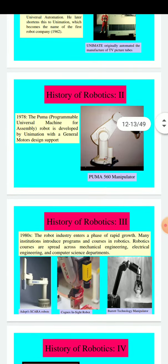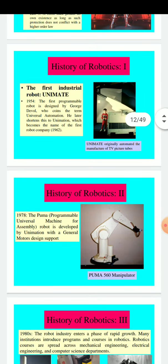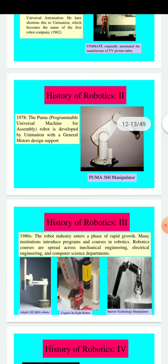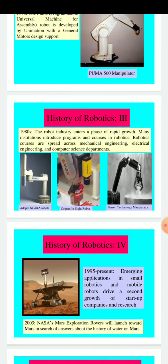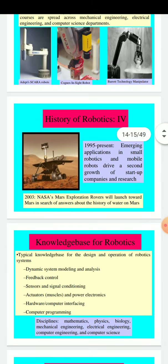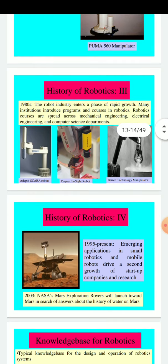Overall, the history of robotics started in 1954 with the Unimation robot. In 1978, through the PUMA company, a Programmable Universal Machine was developed. In 1980, mechanical, electrical, and computer science engineering departments began taking interest and many institutions were established. In 1995, mobile application robots began being produced, and in 2003, space-related development began. So this is a basic history of robotics.